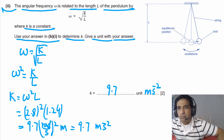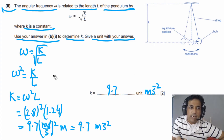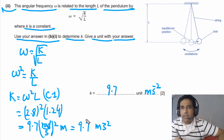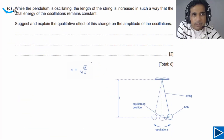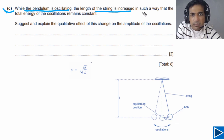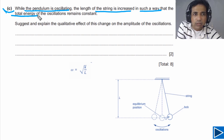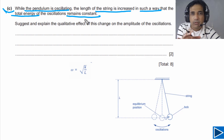So K equals 9.7 meters per second squared. This question has two marks: you get the first mark (C mark) for writing K equals omega squared L, and the second mark (A mark) for the correct answer with units. For part C, while the pendulum is oscillating, the length of the string is increased in such a way that the total energy of the oscillations remains constant — this is the key concept needed to answer this question.